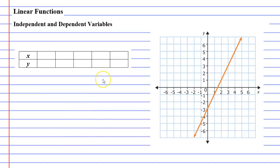For example, on a graph, the independent variable will always be on the horizontal axis and the dependent variable will always be on the vertical axis.